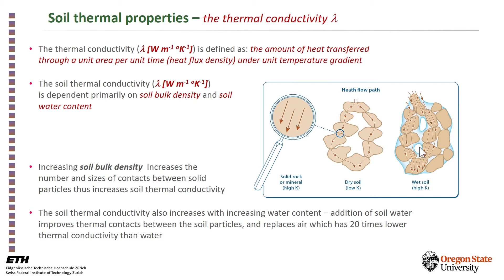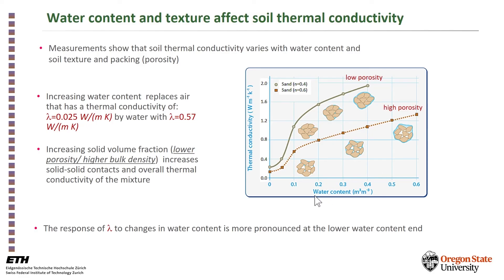As you increase the bulk density, you increase the number of grain contacts. As you increase the water content, you replace air — which has low thermal conductivity — with water, which has high thermal conductivity, and that increases the overall thermal conductivity of the soil. The highest increase in thermal conductivity happens at low water content and then it flattens out, because you're replacing air at 0.025 watts per meter per Kelvin with water that is about 20 times more thermally conductive.